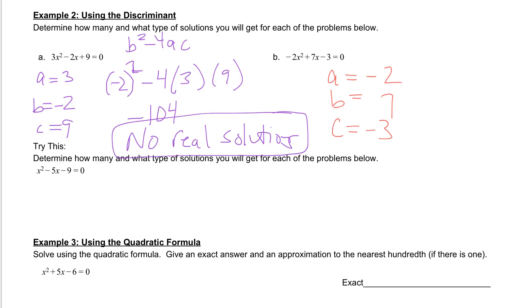Now from here we are going to find the discriminant. So our discriminant would be b squared. So 7 squared minus 4 times a and a is negative 2, times c which is negative 3. Go ahead and plug that in your calculator.